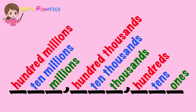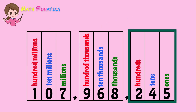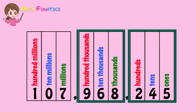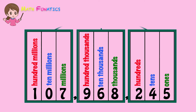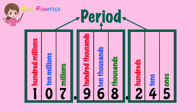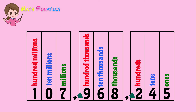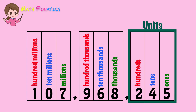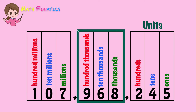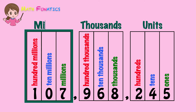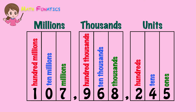To know further about these place values, let's put them in a chart. In this chart, the digits of the whole number are grouped into threes. Each group of three digits is called a period. A space or a comma is used to separate the periods. The first period is called the units period, the second is the thousands period, and the third is the millions period. Billions is the next period after millions, and just like the other periods, billions has also three places.